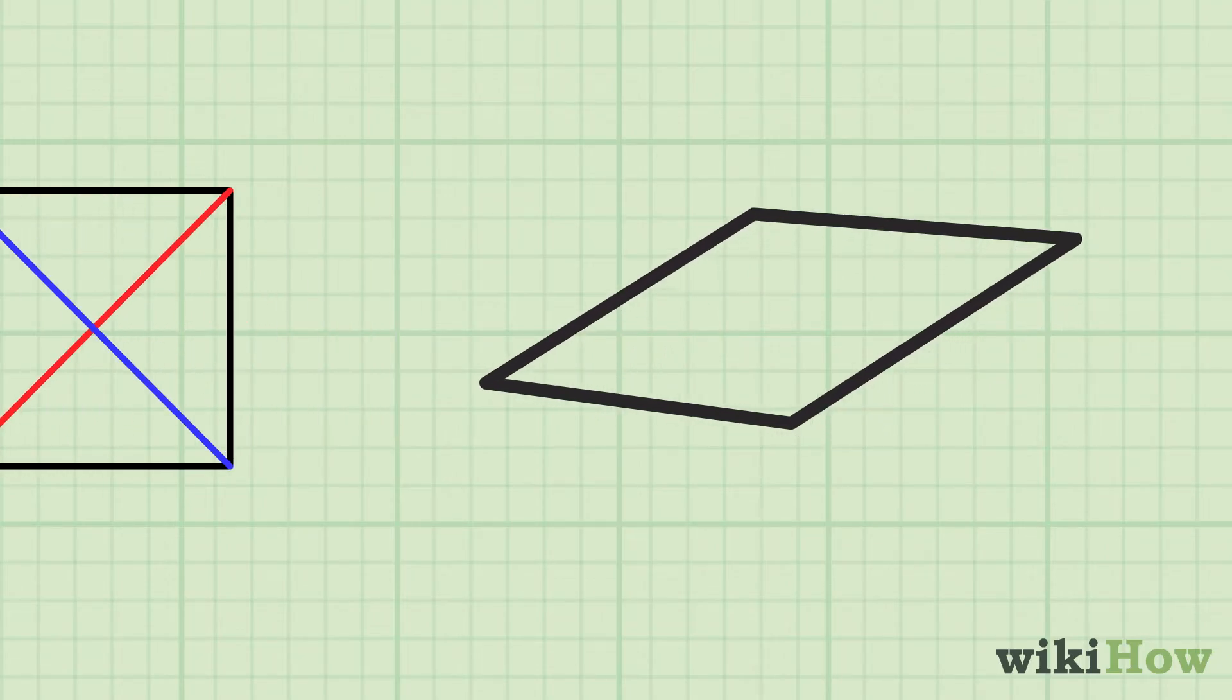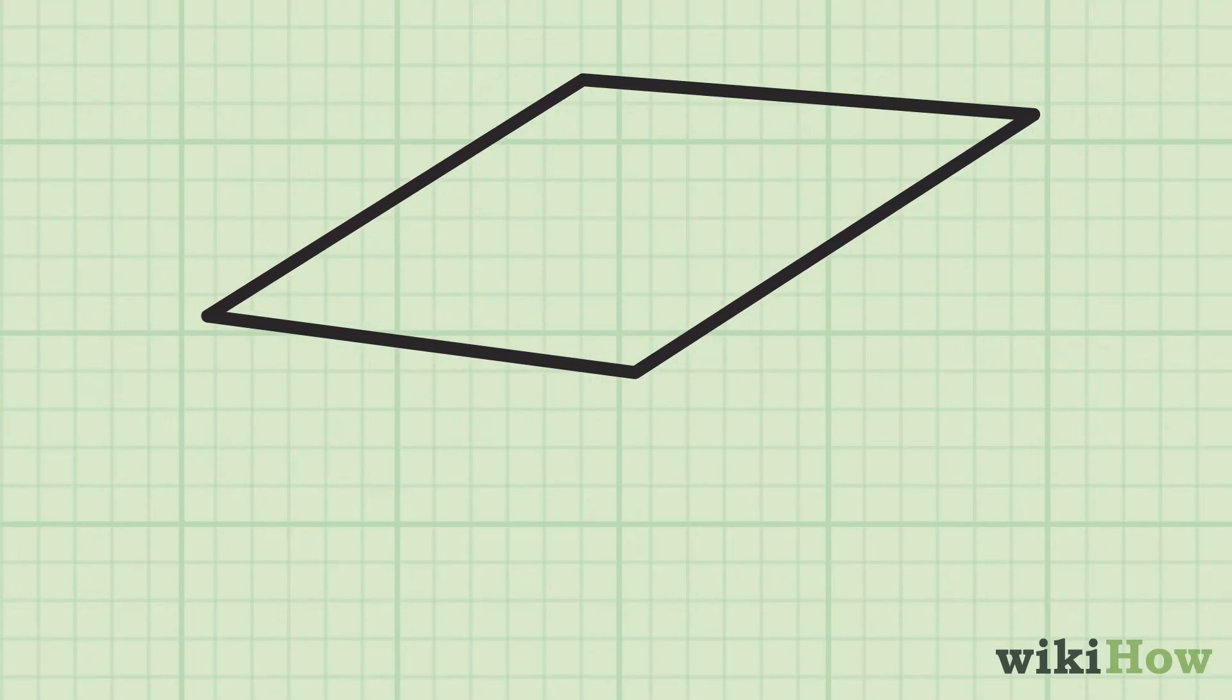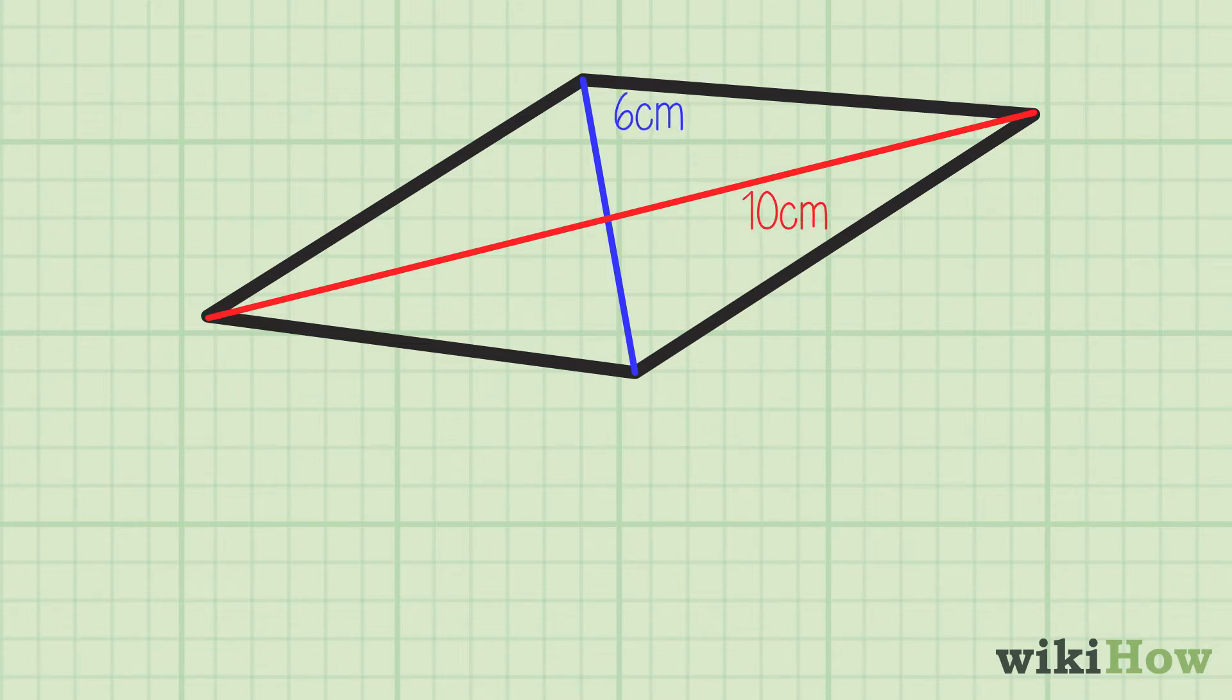There are several easy ways to find the area of a diamond-shaped rhombus. One is to measure the rhombus diagonally from corner to corner, each way. For instance, let's say your rhombus measures 10 centimeters across lengthwise, and 6 centimeters across widthwise.